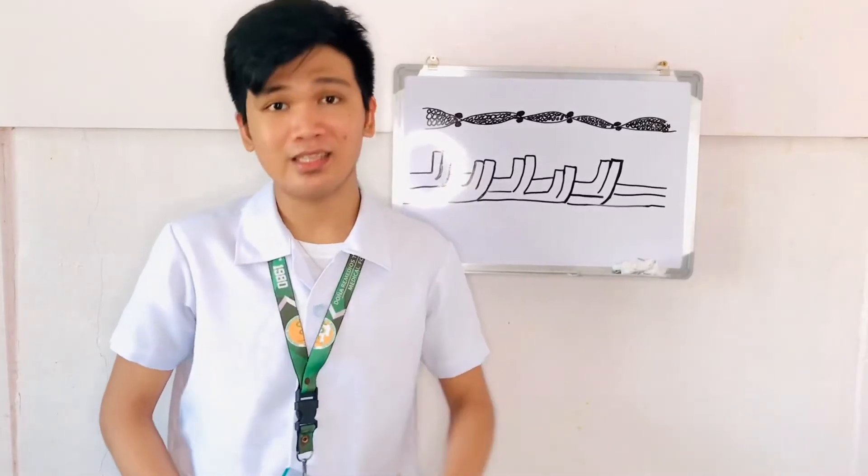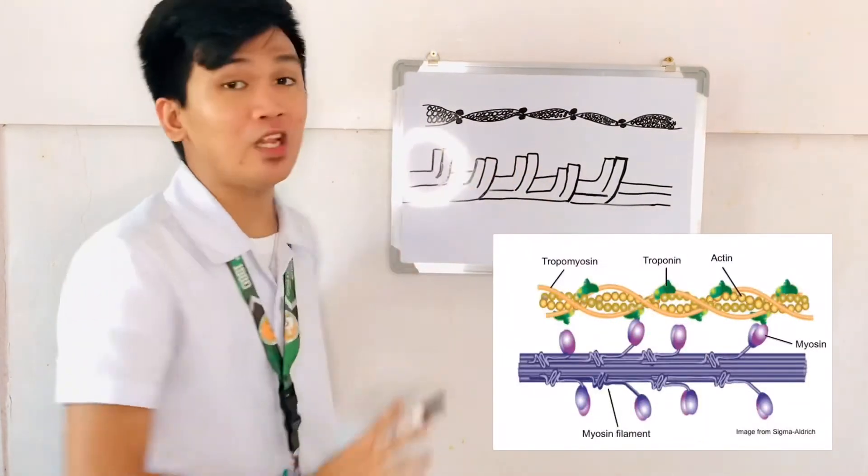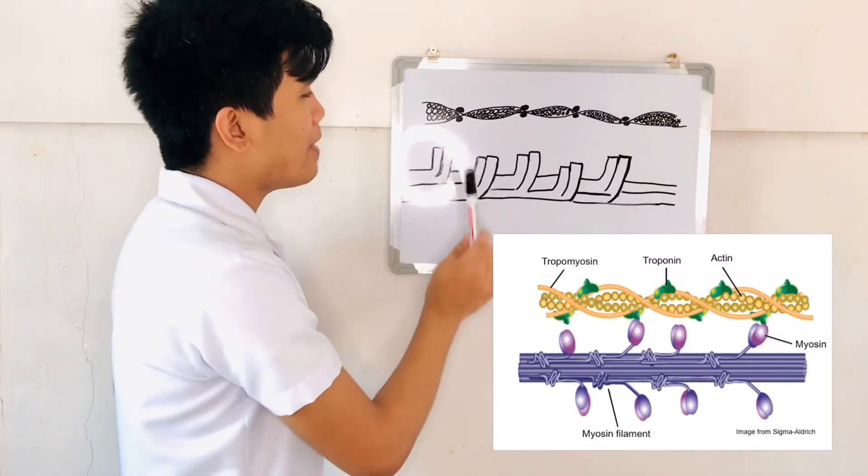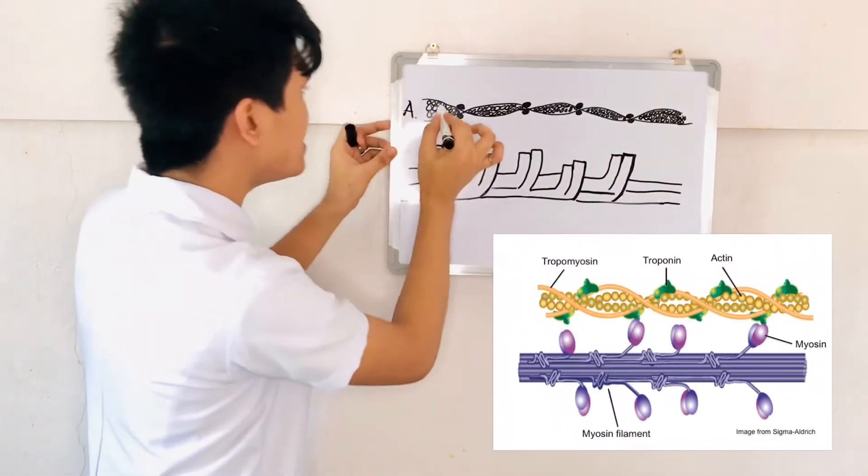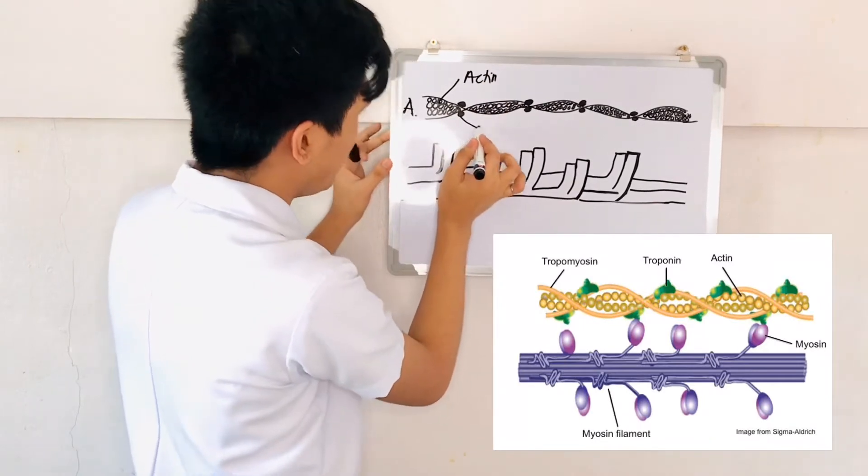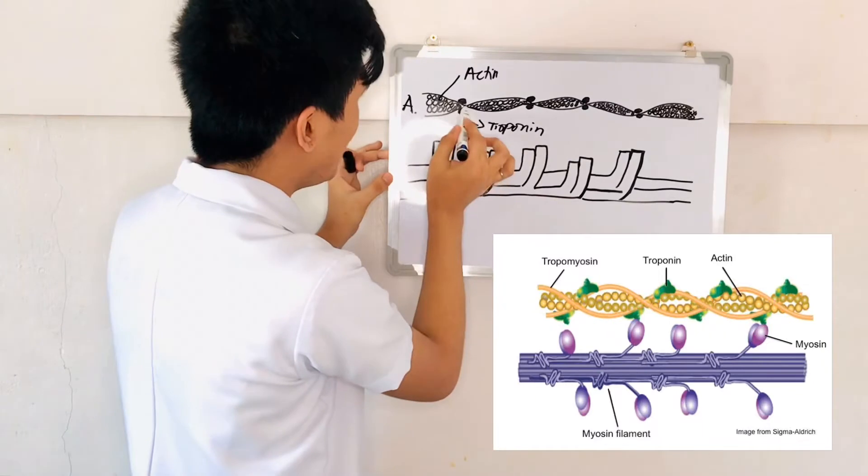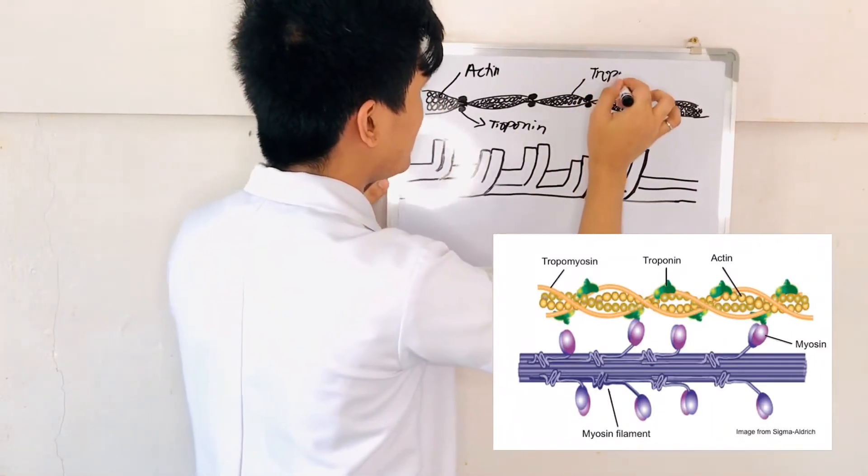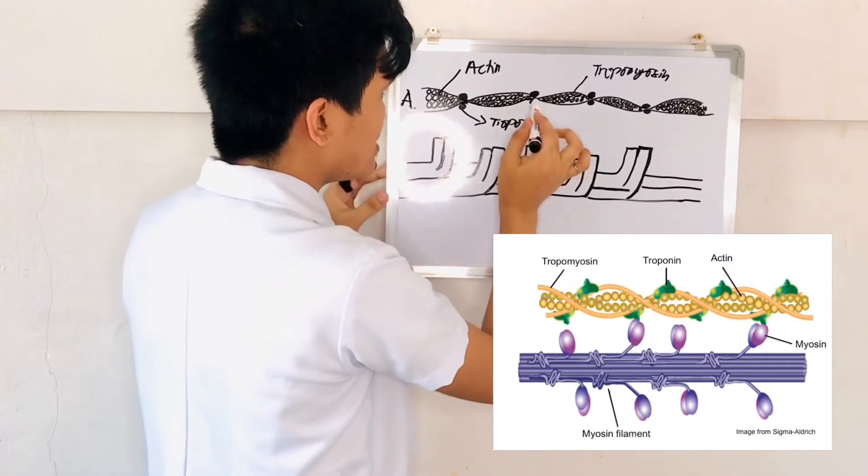To help you better understand the myosin and the actin, we have here the drawing. So this one is an actin myofilament of protein or the thin myofilament of protein. While this one here is the thick myofilament of protein. So for this one, we have these circles. These are the actin molecules. While this one here are the troponin. Troponin is found at the notches between two actin strands. While the tropomyosin, this one here is tropomyosin, is a thin molecule that is along the strand of the actin.